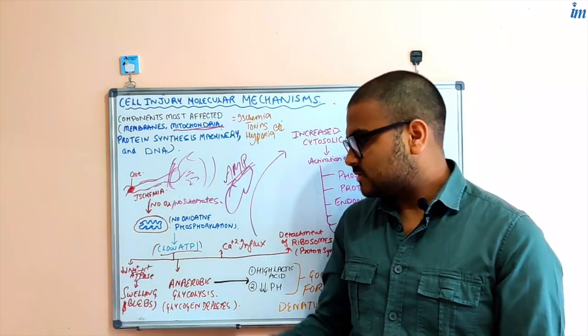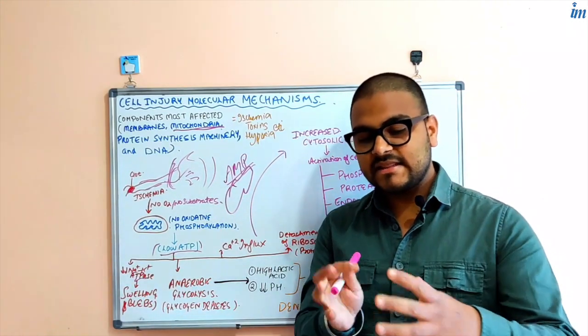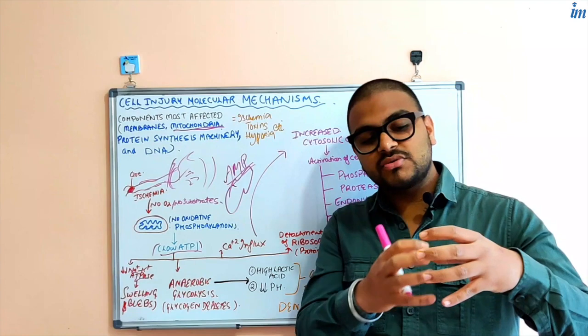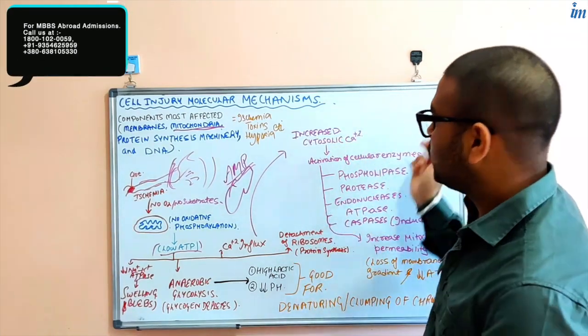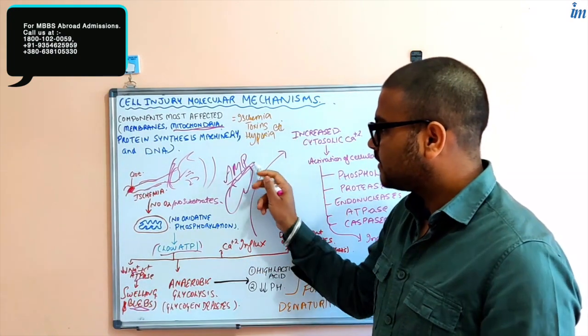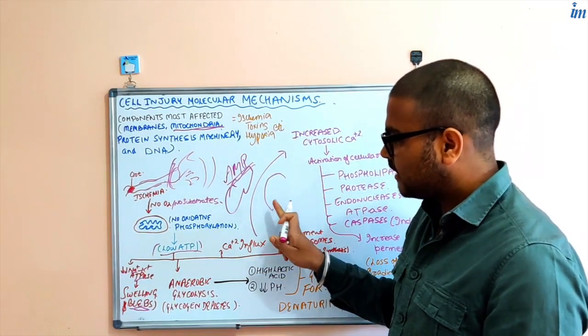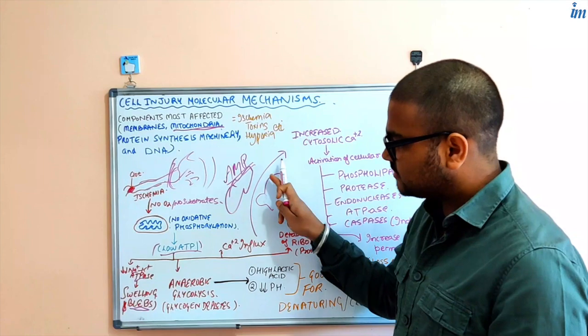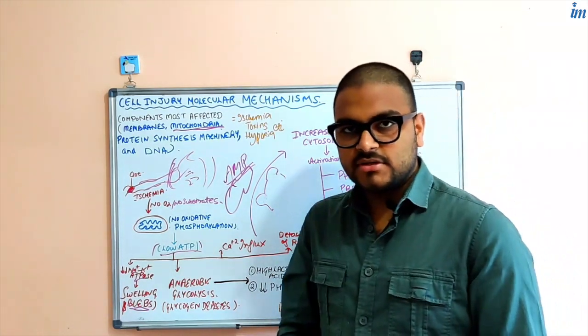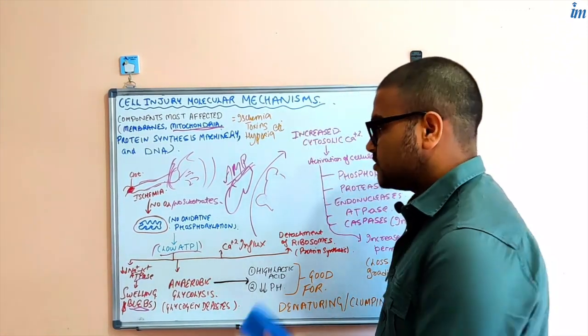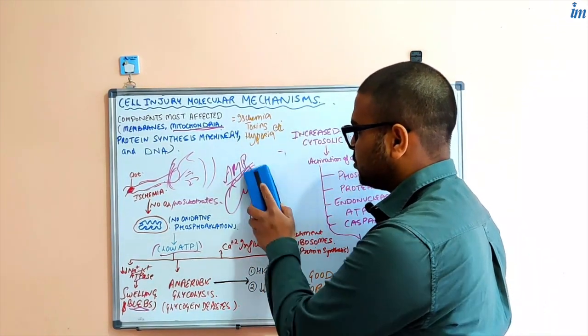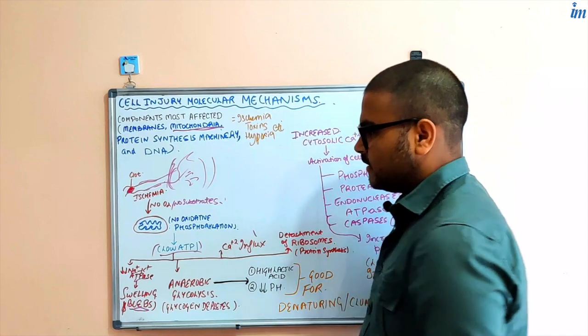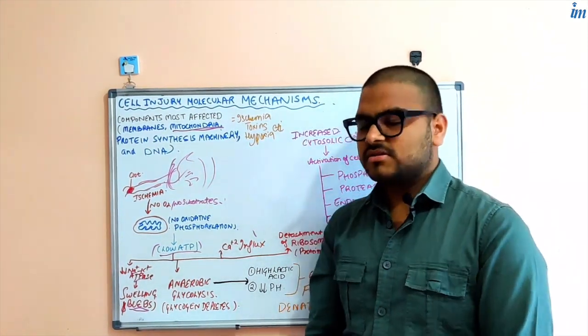So sodium and water accumulate in the cell, and the cell is going to swell. The cell will appear big and swollen, and because of that water and sodium inside, the membranes will have blebs. Blebs are outpouchings of the membrane. The appearance of blebs and swelling in the cell is a very early feature that can be seen with depletion of ATP, whatever the cause is.